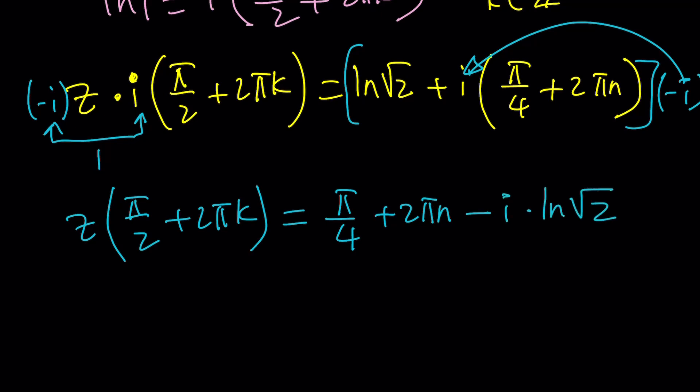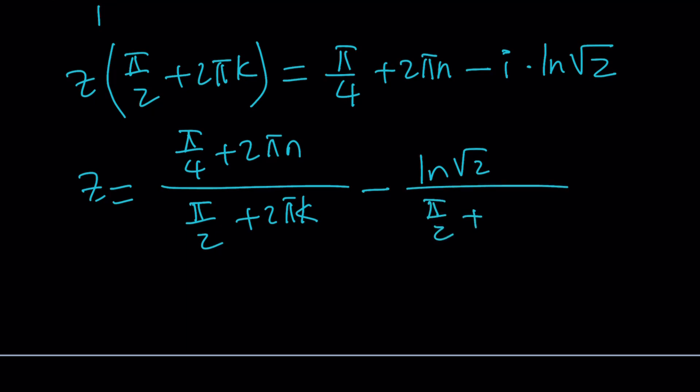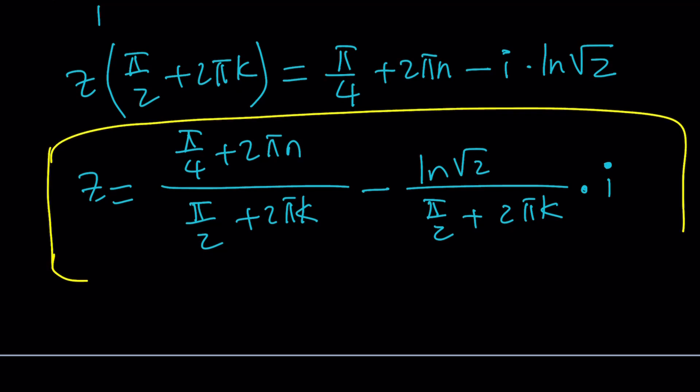And then finally, by division, we find that z is equal to pi over 4 plus 2 pi n divided by pi over 2 plus 2 pi k, minus ln root 2 divided by pi over 2 plus 2 pi k. And all of that is multiplied by i. In other words, we get the real part and the imaginary part and they are separated. So, that will be the general, general solution if n and k are integers.